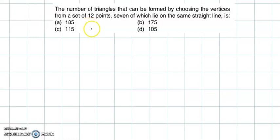Hello and welcome back. Now let's discuss an example from permutations and combinations. The question is: the number of triangles that can be formed by choosing the vertices from a set of 12 points, 7 of which lie on the same straight line.